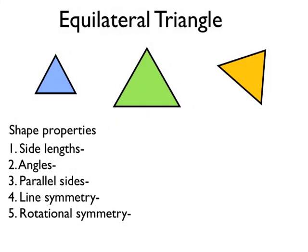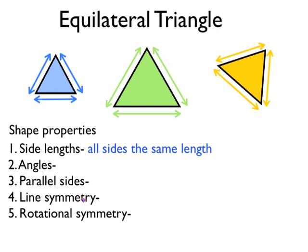So let's start with an equilateral triangle. I've drawn three equilateral triangles here. Let's look at the side lengths. On an equilateral triangle, all of the sides are the same length. That's one of the key features of an equilateral triangle — all three sides of the triangle are the same length.